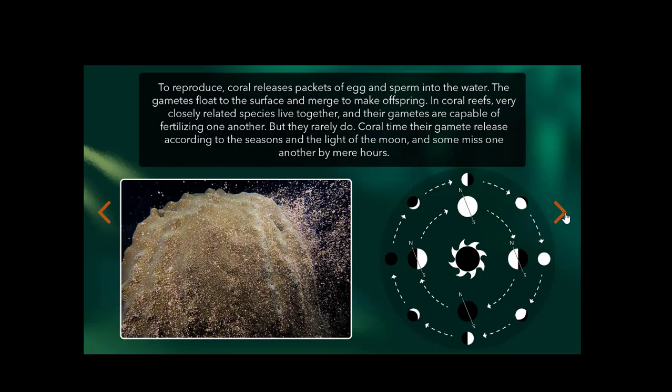In coral reefs, very closely related species live together, and their gametes are capable of fertilizing one another. But they rarely do. Coral time their gamete release according to the seasons and the light of the moon, and some miss one another by mere hours.